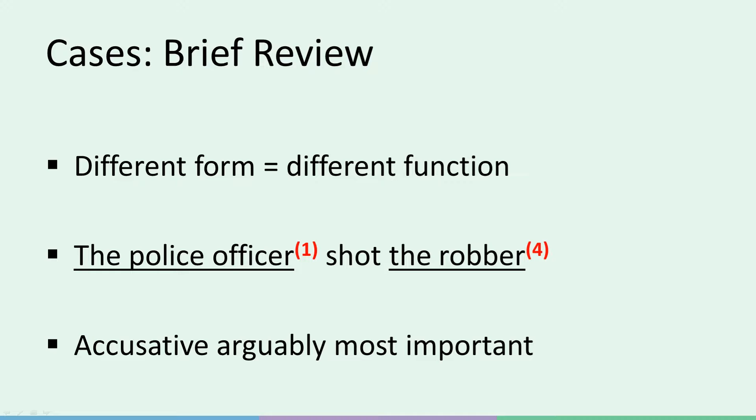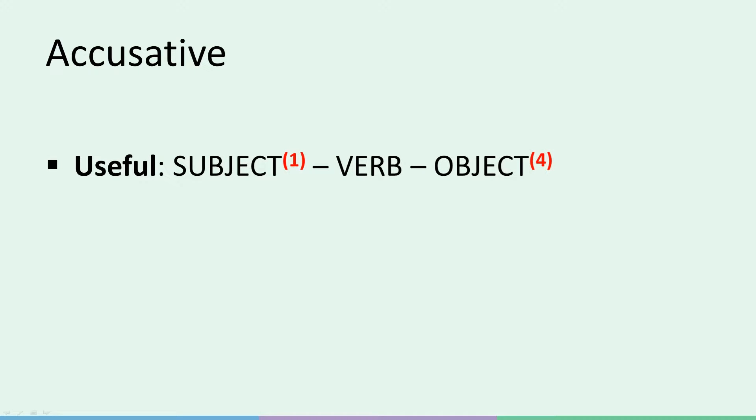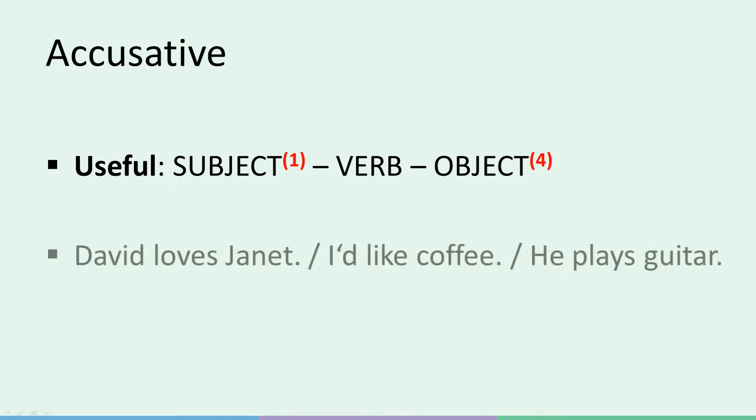The first reason is that the accusative is arguably the most important case in the Slovene case system. The basic building block of both English and Slovene is the subject-verb-object structure: 'David loves Janet', 'I'd like coffee', 'He plays guitar' — all of them have the same essential subject-verb-object structure in common. The second reason the accusative is learned first is because it's relatively easy. If you're familiar with case number one, the nominative, the accusative follows quite naturally.